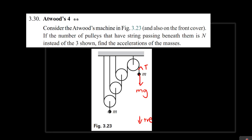For the other mass, we consider the tension in its string. Notice that the tension in this string is different from the tension in the other string. The first string has tension t, and it exerts a force on the pulley. Since the pulley is massless, the string exerts a force equal to 2t pointing upwards, which must be counteracted by the downward force from the other string. So the tension within that string has to be equal to 2t.